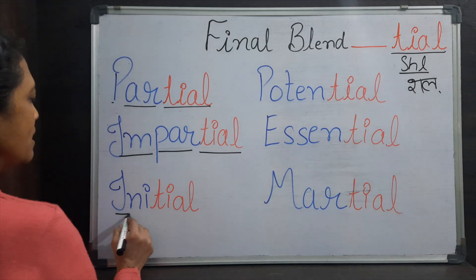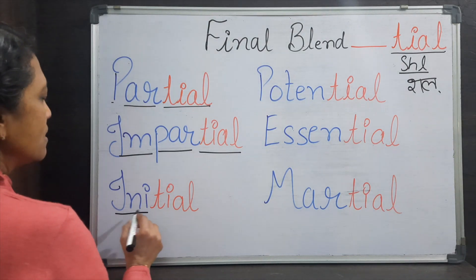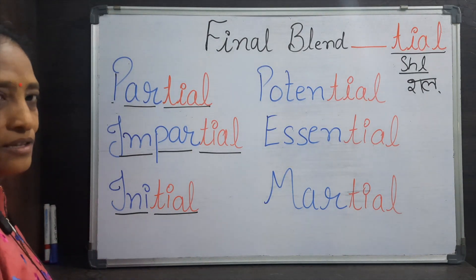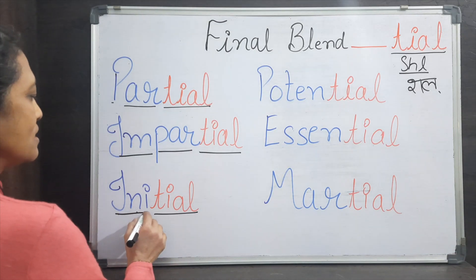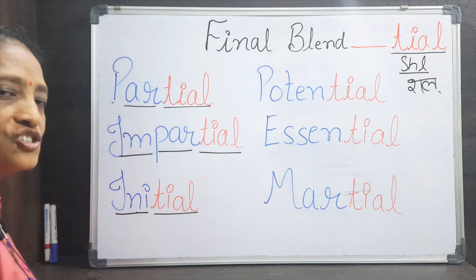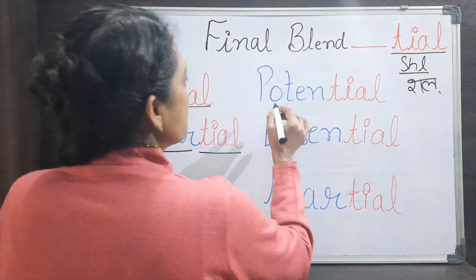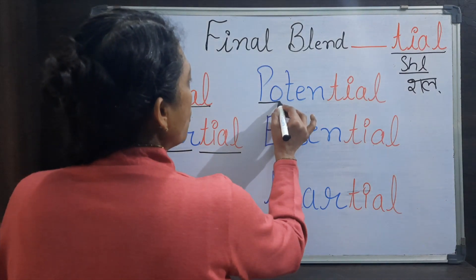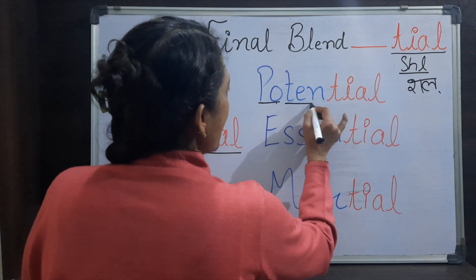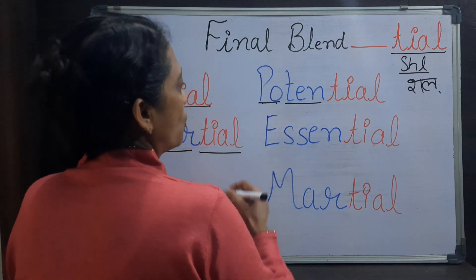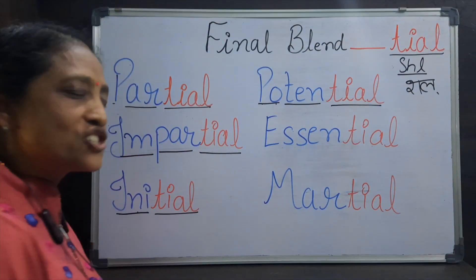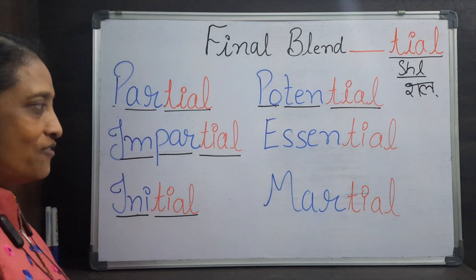Next we have I-N-I-shl — Initial. I-N-I-T-I-A-L — Initial. Right? After that: P-O-T-E-N-T-I-A-L — Potential. Potential.